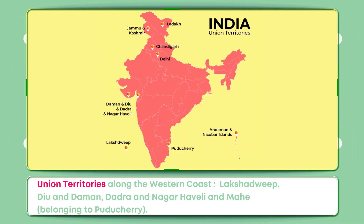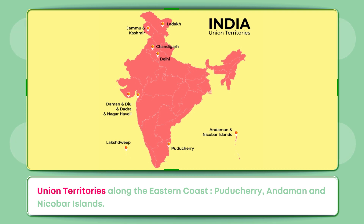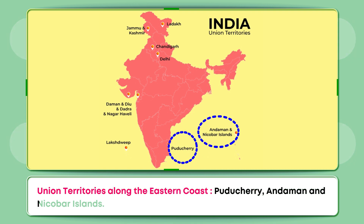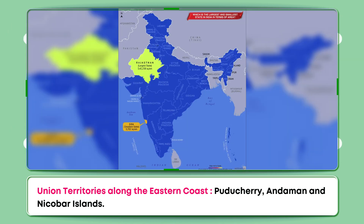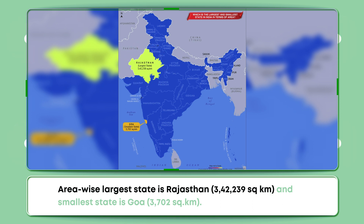Union territories along the western coast include Lakshadweep, Diu and Daman, Dadra and Nagar Haveli, and Mahe belonging to Puducherry. Union territories along the eastern coast include Puducherry and Andaman and Nicobar Islands. Area-wise, the largest state is Rajasthan at 3,42,239 square kilometers, and the smallest state is Goa at 3,700 square kilometers.